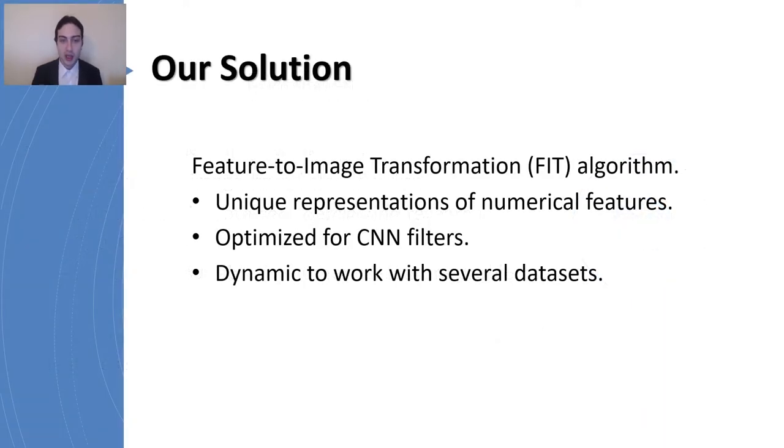Our solution is basically an algorithm, Feature-to-Image Transformation, which should have a unique representation of every number in the dataset that you find. It should be optimized for CNN filters and it should be dynamic to work with several datasets. So it's basically generic. You can just apply it to any problem where you have a feature vector of numbers.